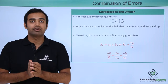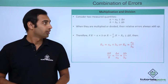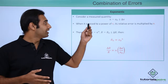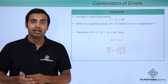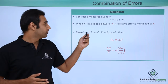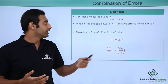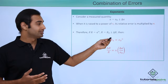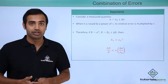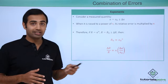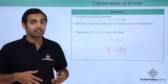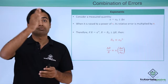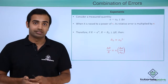Now let's talk about what happens when we have a number raised to a specific exponent. We have one number a defined as a naught plus or minus delta a, and we raise this number a to the power of n, storing the result in variable r. If we express r as r naught plus or minus delta r, then r naught equals a naught raised to power n, which is straightforward. However, the relative error in the result is simply n times the relative error in the quantity. So whenever a number is raised to an exponent, the exponent gets multiplied to the relative error in the final result.